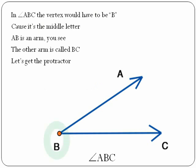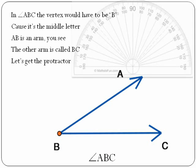In angle ABC, the vertex would have to be B because it's the middle. AB is one arm, you see, and the other arm is called BC. Get the protractor.